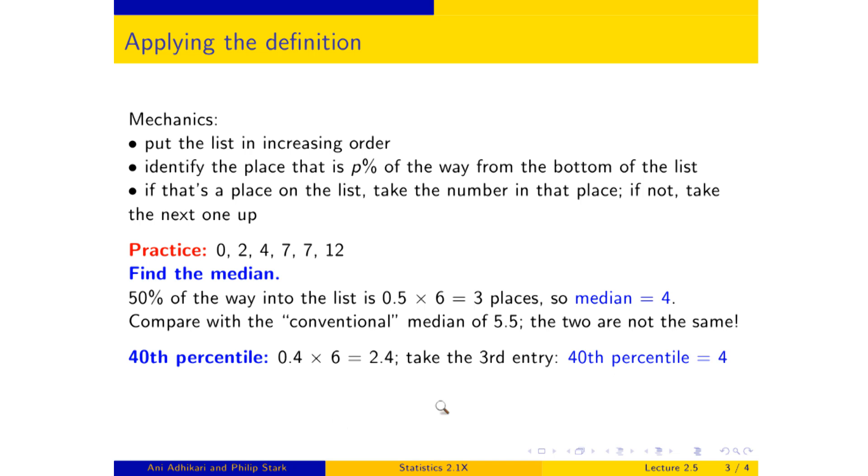Find the 40th percentile. You do exactly the same thing. 0.4 of 6 is 2.4. So that's not the second entry. That's not the third entry. 2.4 is here. And so what do you do? Your rule says take the next one up, 4. The 40th percentile is also 4.